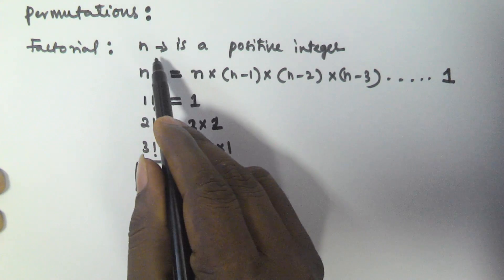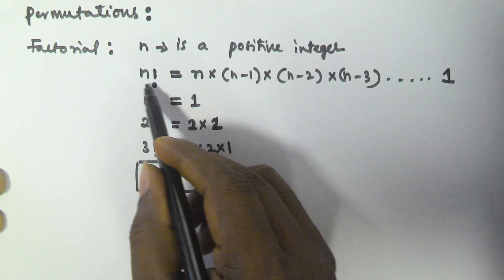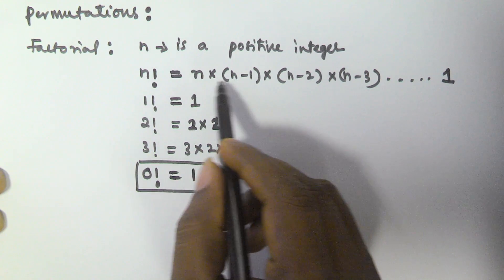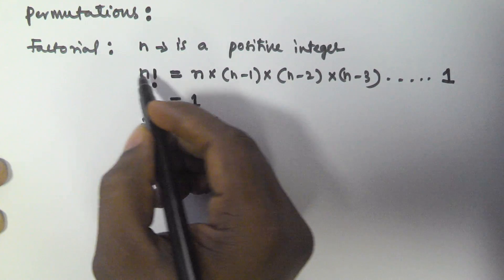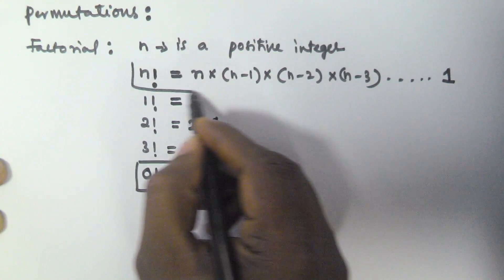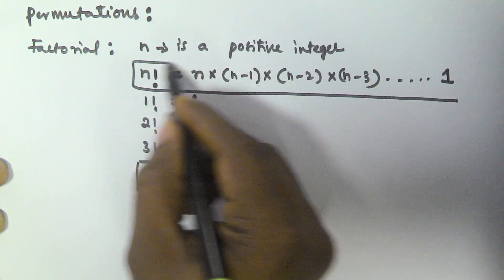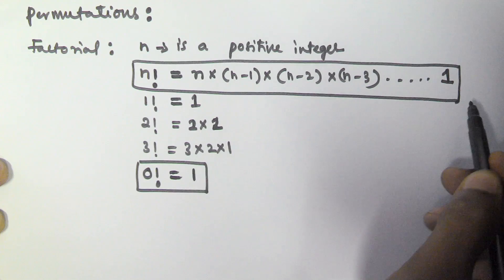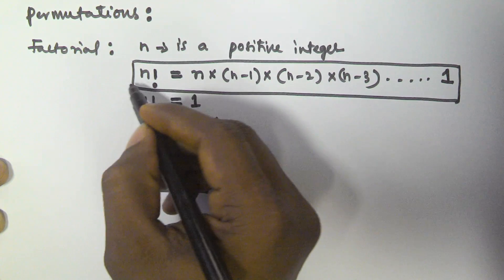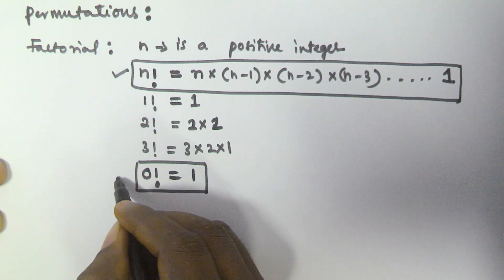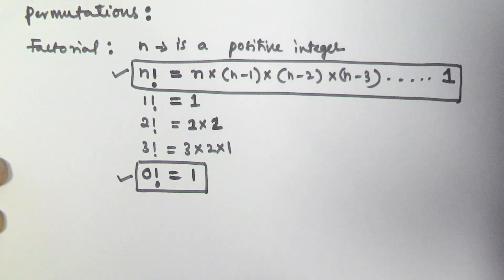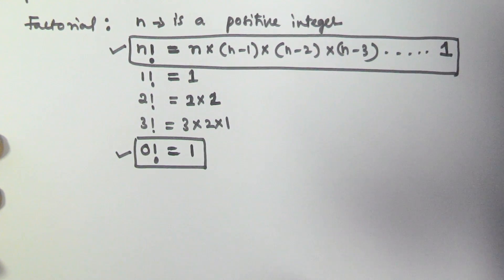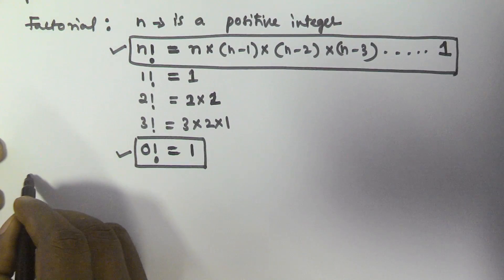So when n is a positive integer, n factorial is defined as n into n minus 1 into n minus 2 into n minus 3, multiplied until we get 1. And 0 factorial value is 1. Now we will see permutations.